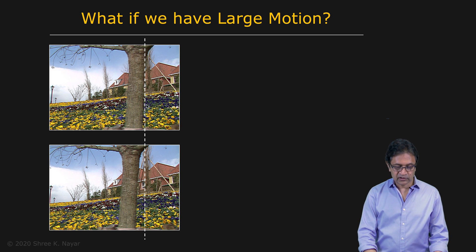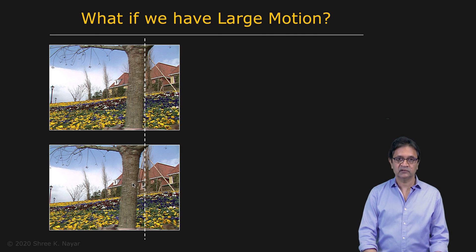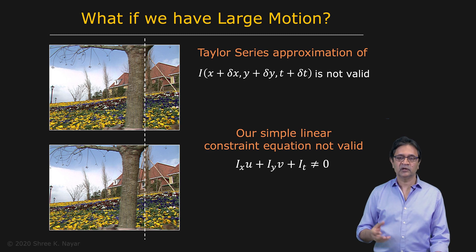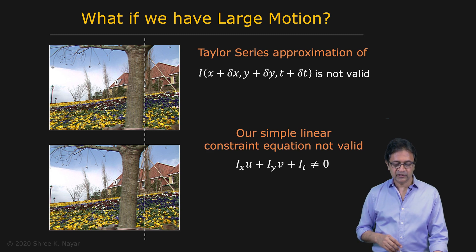And because the tree is close to the camera, its motion is going to be substantial as per perspective projection, maybe by tens of pixels. In this case, we can't assume that delta X, delta Y are going to be small. That is, our Taylor series approximation for the image brightness I is no longer valid, which also means that our simple linear optical flow constraint equation is not valid anymore.